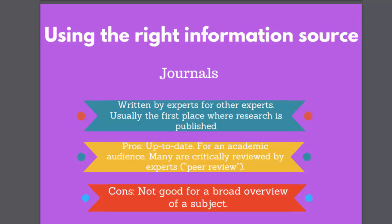Academic journals are regular publications similar to magazines which focus on a particular subject. They are particularly good for finding out about recent research. The best quality journals are what we call peer reviewed, which means they are critically assessed by a panel of experts before being accepted for publication. Recent journal articles will give you the most current scholarship available on a subject, as the publication time for an article is much shorter than for a book. Journals give you high quality, focused information, but they are not great if you want a broad overview of a subject.